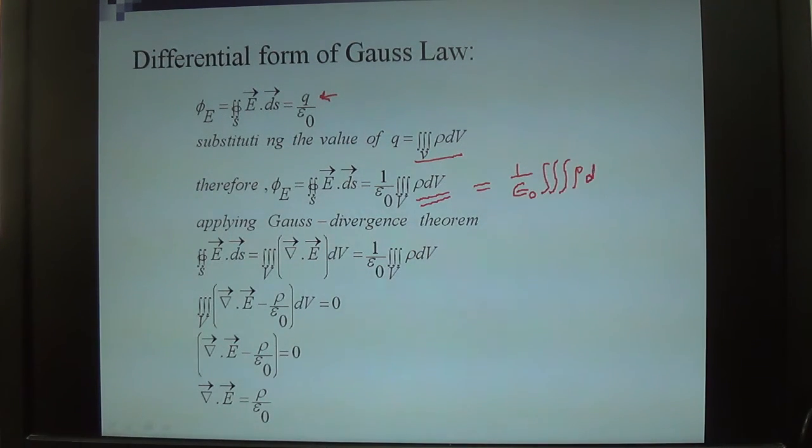Now, what we have to do - you see here this is the closed surface integral, this is the volume integral. These notations indicate that we have to use Gauss's divergence theorem. Gauss's divergence theorem provides a relationship between the closed surface integral and the volume integral.